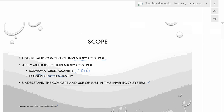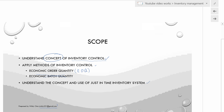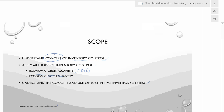This topic is quite simple — it's a brief summary of what you need to know on inventory control. Our scope today is the concept of inventory control, followed by the EOQ, which is the economic order quantity. There is also the economic batch quantity, but we will not be covering that in this video. Finally, we end off by discussing the concept of just-in-time inventory system.